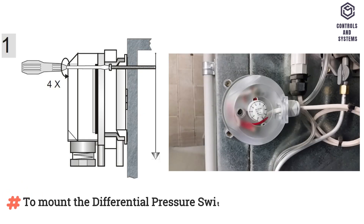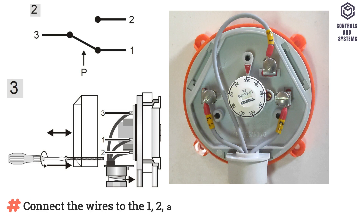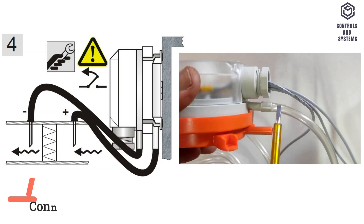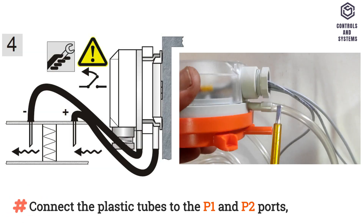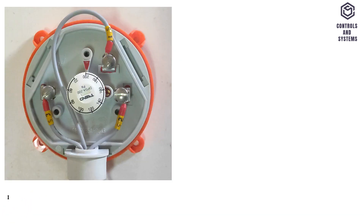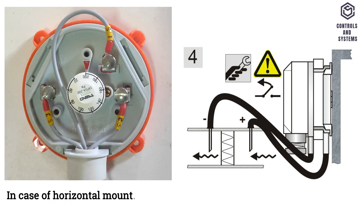Installation instructions: To mount the differential pressure switch, use 2 length screws. Connect the wires to the 1, 2, and 3 terminals. Remove transport protection from P2. Connect the plastic tubes to the P1 and P2 ports. The trip pressure refers to vertical mounting.